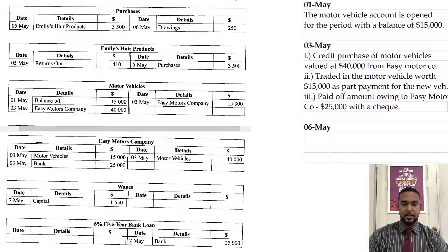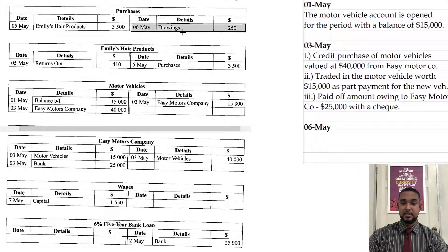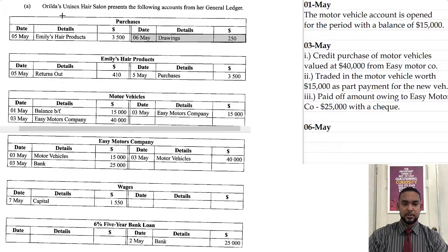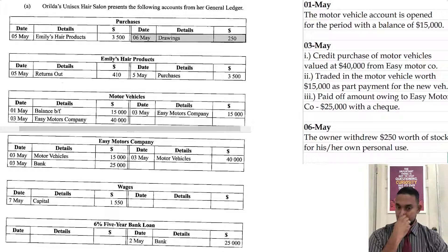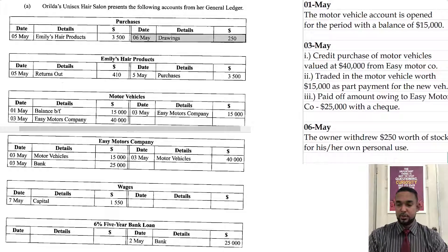On the 6th of May, I'm seeing an item in the purchases account on the credit side — $250, with details saying drawings. This is when the owner removes stock, in this case maybe for personal use. So the owner withdrew $250 worth of stock or inventory for his or her own personal use.